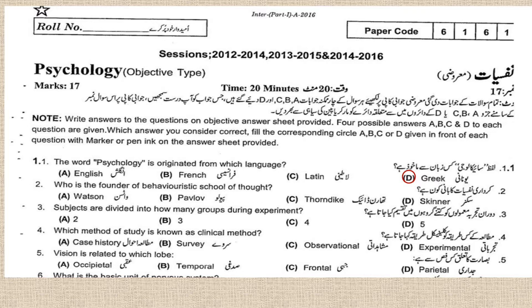Number two: who is the founder of the behavioristic school of thought? Watson is the founder of the behavioristic school of thought. Number three: subjects are divided into how many groups during an experiment?